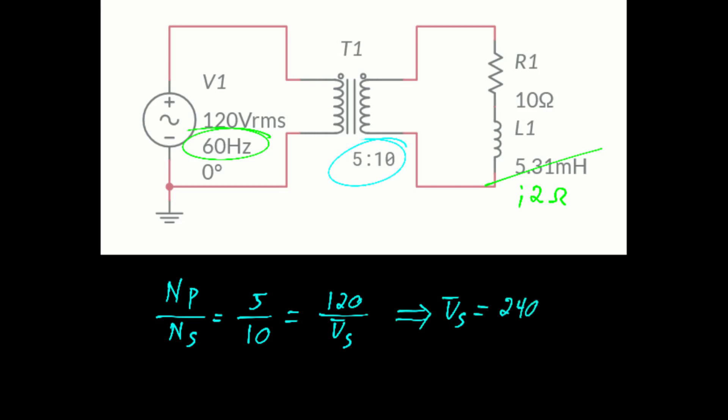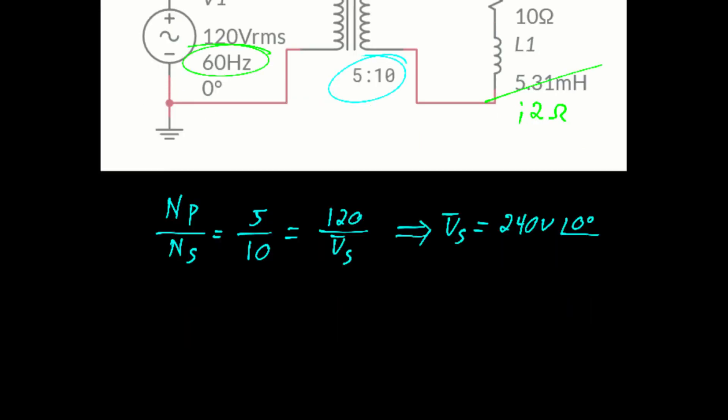From there, we can calculate the current as voltage divided by the impedance of the load, which gives us about 23.5 amps at an angle of negative 11 degrees. This is inductive as the angle of the current is negative.